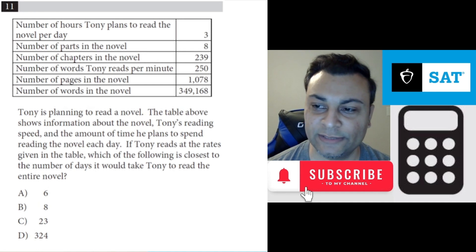Question 11 says Tony's planning to read a novel. The table above shows information about the novel, Tony's reading speed, and the amount of time he plans to spend reading the novel each day.